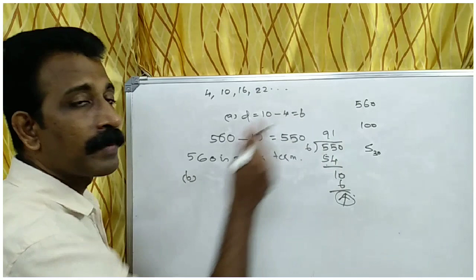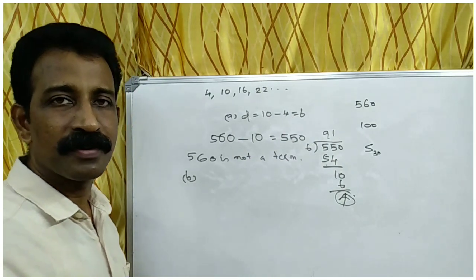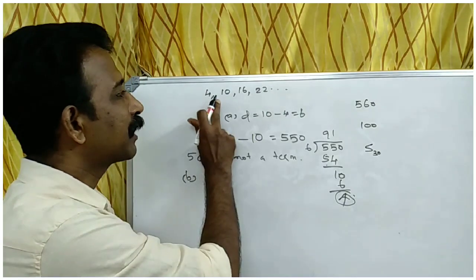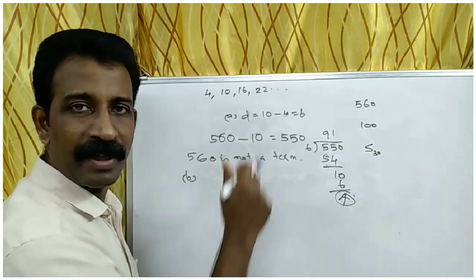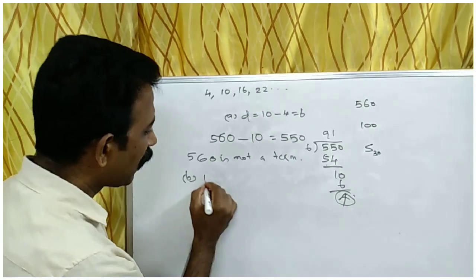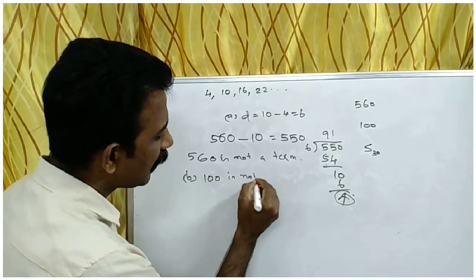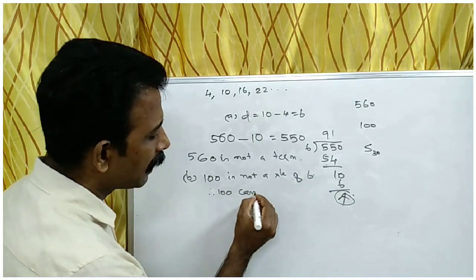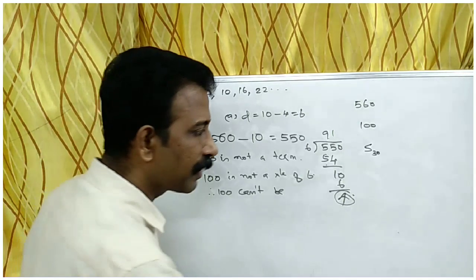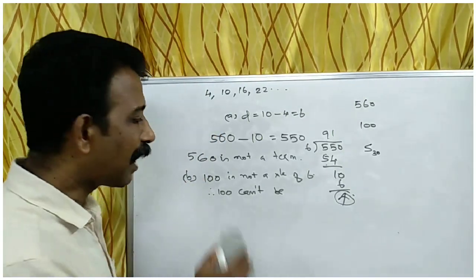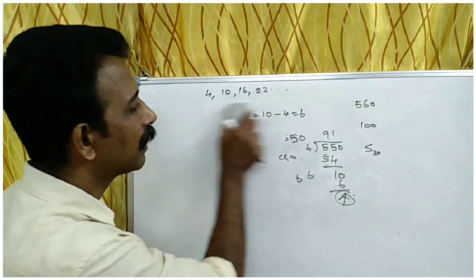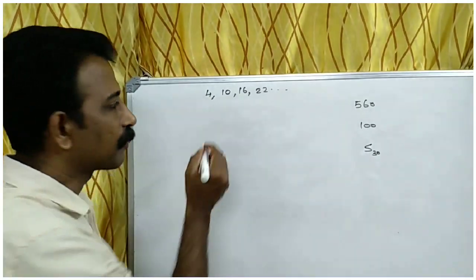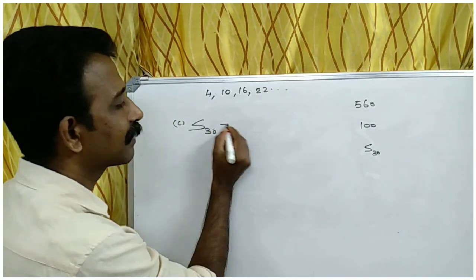Part B: Can the difference between any two terms be 100? The difference between any two terms must be a multiple of the common difference 6. Since 100 is not a multiple of 6, 100 cannot be the difference between any two terms.